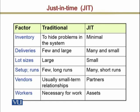Regarding deliveries, traditional manufacturing uses large deliveries in large quantities. For example, if there is a requirement of 1,000 units, there will be only one delivery of 1,000 units. On the other hand, in just-in-time, there are frequent deliveries of very small quantities, so that inventory does not build up.